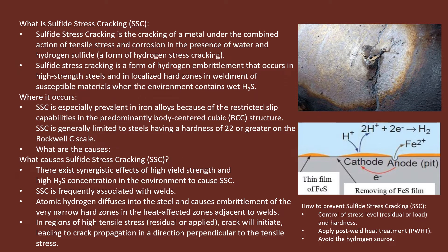Hydrogen embrittlement occurs especially in the hard zones in the heat affected zones adjacent to the welds. Whenever there is welding, there will be a heat affected zone, and adjacent to those zones, if there are hard zones, hydrogen embrittlement may occur in a wet H₂S environment. Due to high tensile strength, residual stresses are available, a crack will initiate, leading to crack propagation in the direction perpendicular to the tensile stress. When high tensile strength material, heat affected zone, and H₂S environment all meet at a single point, hydrogen embrittlement and sulfide stress cracking result.